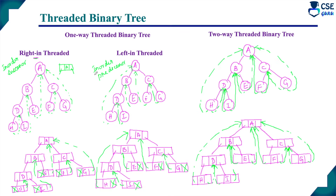In one-way threaded binary tree, only one side thread is represented — either right-in threaded or left-in threaded. For both types, we have shown the binary tree as well as the linked list representation of the threads. For a 4-mark question, constructing any one threaded binary tree is sufficient. For a 6-mark or 8-mark question, it is better to show both one-way and two-way threaded binary trees to get full marks. This is all about threaded binary tree.